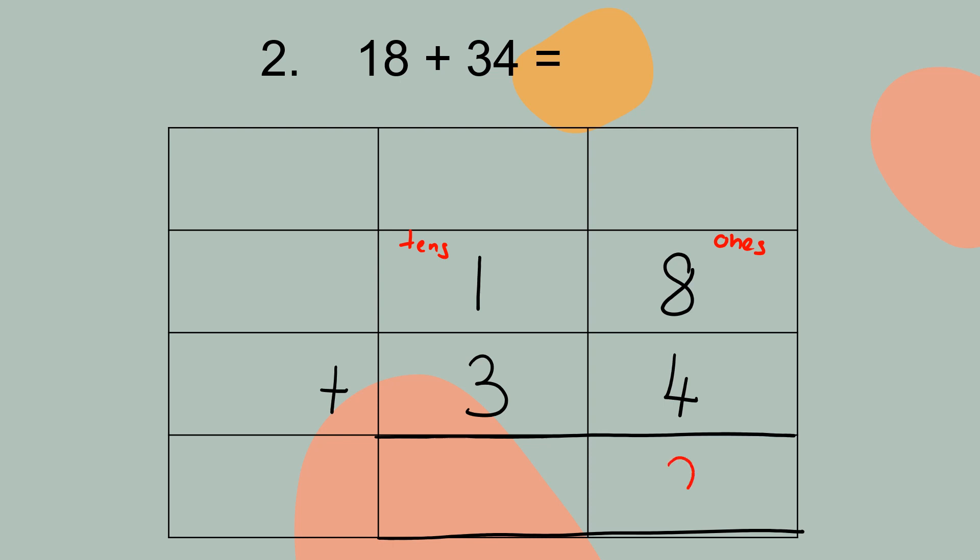So you write down 2 and you write down 1 here. 1 plus 1 equal to 2, 2 plus 3 equal to how much? 5. So your answer is 52.